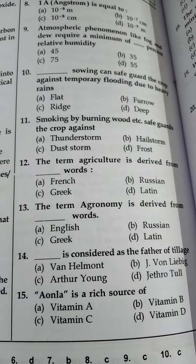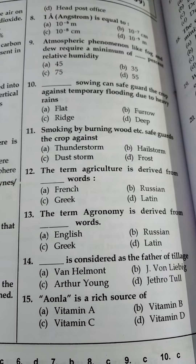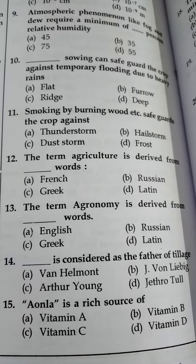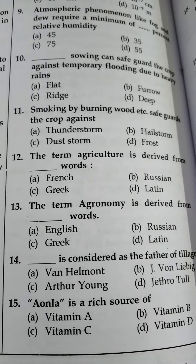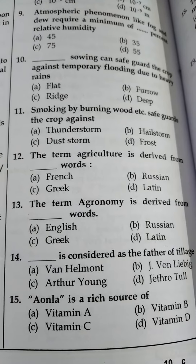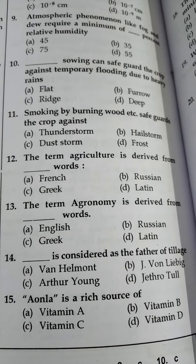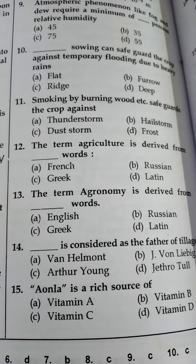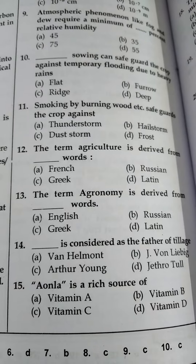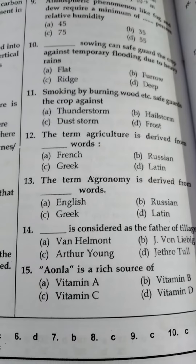Question 10: Sowing on ridges can safeguard a crop against temporary flooding due to heavy rains — ridge sowing is done, option C is correct. Question 11: Smoking by burning wood safeguards the crop against frost — remember it.